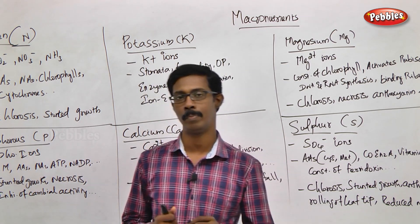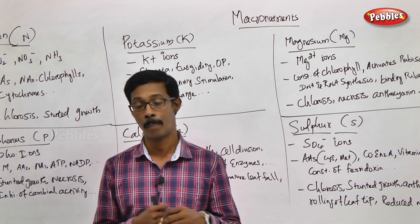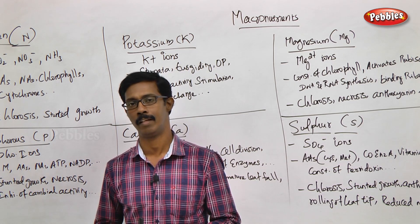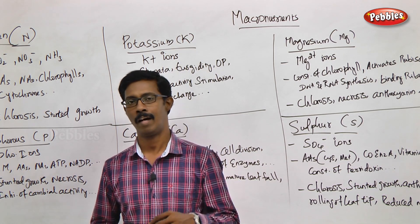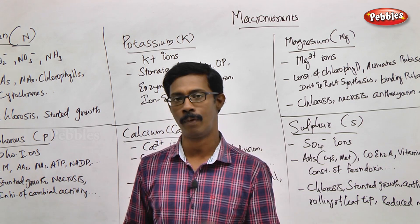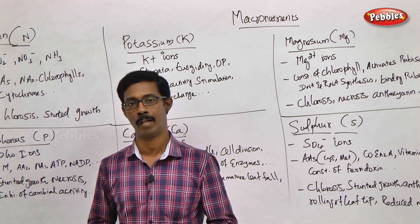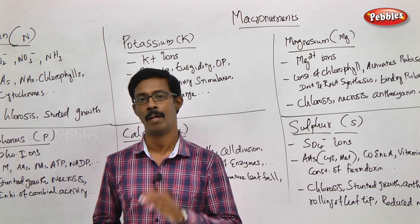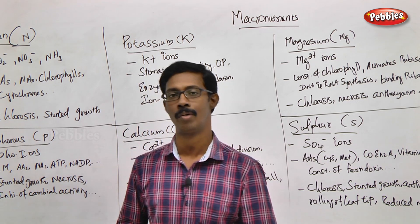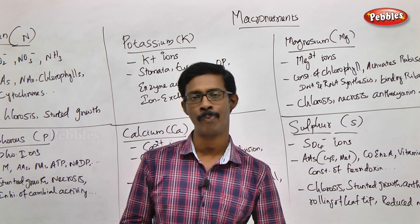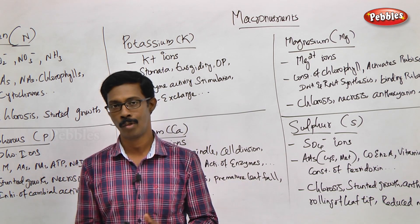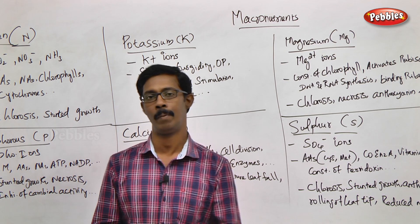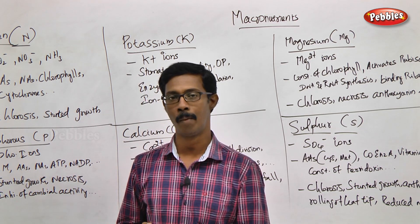We will look at which form a particular mineral is absorbed — whether in ionic or other forms in the cell. We will examine the functions played by that mineral, and if the mineral is absent in the plant, what kind of deficiency symptoms or disease will show. So we will know these four details.